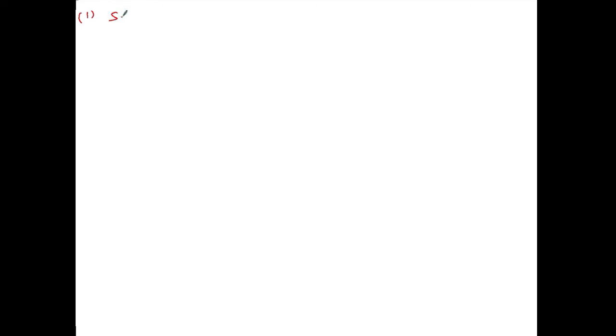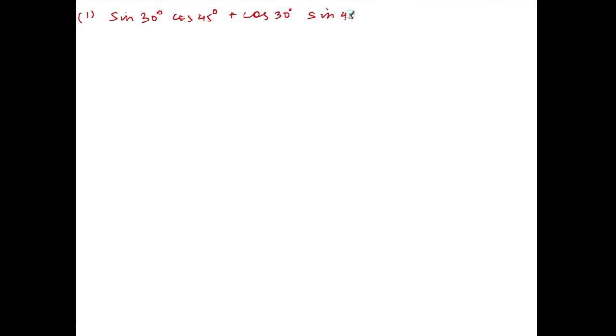We are doing exercise 10.1, question number 1, Roman number 1. The question is: find the value of the following — sine of 30 degree, cos of 45 degree, plus cos of 30 degree and sine of 45 degree. Solution.